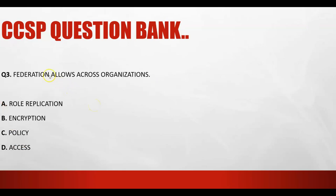Third question: federation allows access across organizations — between two organizations. What does federation allow? Does it allow role replication, encryption, policy synchronization, or access? As we have seen, federation federates identity but does not replicate roles — authorization is handled by the service provider. Encryption and policy synchronization are not what federation allows. Federation allows users to access multiple resources across organizations. The answer is access.